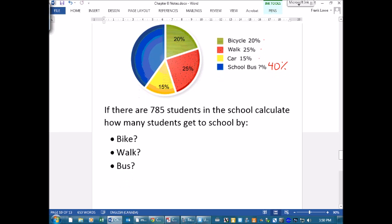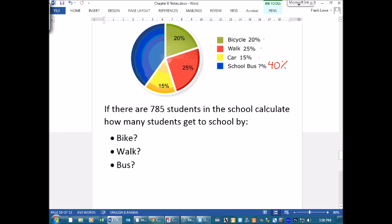Now here's where we have to do a little number crunching. So if there are 785 students in the school, calculate how many students get to school by the following methods. So bike, riding our bike, that's 20%, right? So we want to find 20% of 785. You know what, I need some more space here, I don't want it to be too messy.